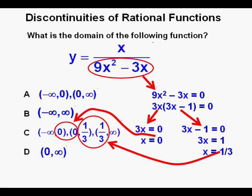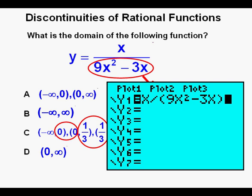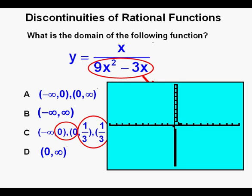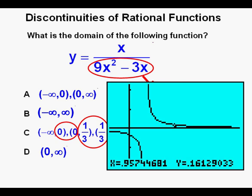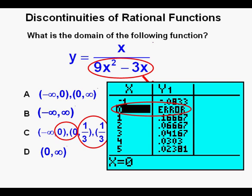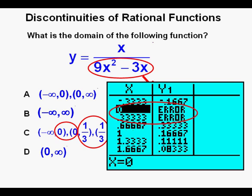In the calculator, the function is entered into the function editor. Graphing in a standard window shows what appears to be a vertical asymptote around x equals 0. Adjusting the window using zoom box gives a closer view. We can see the function appears continuous across the y-axis, but there is a discontinuity between x equals 0 and x equals 1. Going to the table view shows the discontinuity at x equals 0, and since it didn't show up clearly on the graph, it's a hole or removable discontinuity. Resetting the window confirms discontinuities at both 0 and 1 third, confirming C is correct.